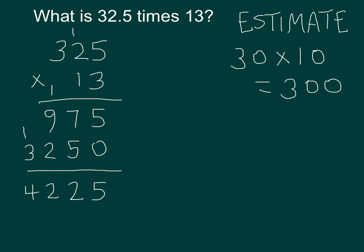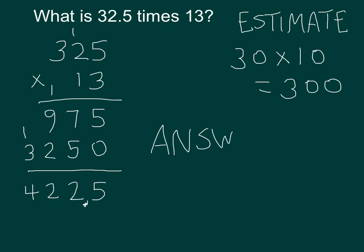So here's my question: where does the decimal point go? Do I want to put it here, or here, or here, or here, or here? Let's look at my estimate. My estimate says it's about 300, so I know I want something in the hundreds, preferably close to 300. I want to put my decimal point right here because that's 422.5. That's exactly what I'm going to do — that's where my decimal point goes. My answer is 422.5.